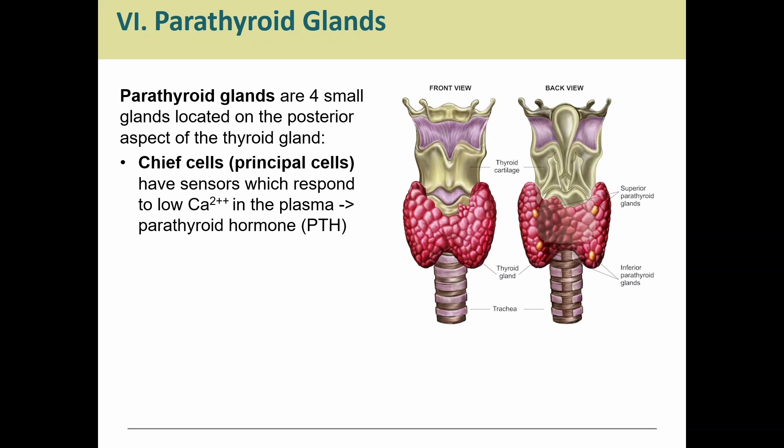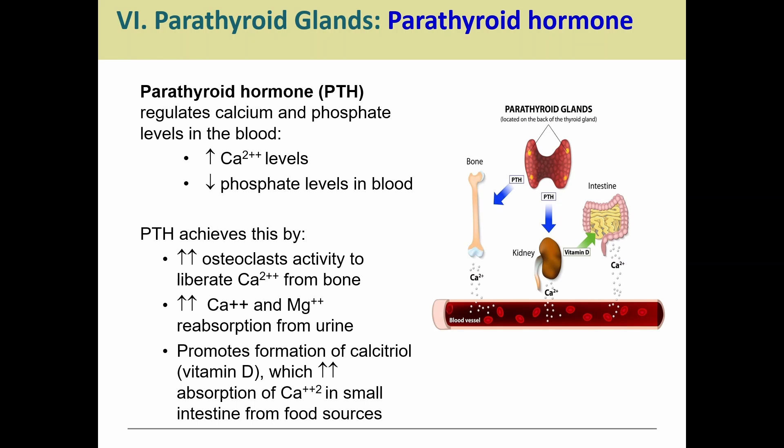The thyroid produces calcitonin when calcium in the blood is too high. The parathyroid glands work the opposite — they detect low blood calcium. When blood calcium is low, they release a hormone aptly named parathyroid hormone, or PTH, to help bring those calcium levels back up.